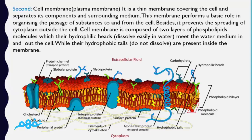Secondly, we will talk about the cell membrane, or plasma membrane. It is a thin membrane covering the cell and separating its components from the surrounding medium. This membrane performs a basic role in organizing the passage of substances to and from the cell.